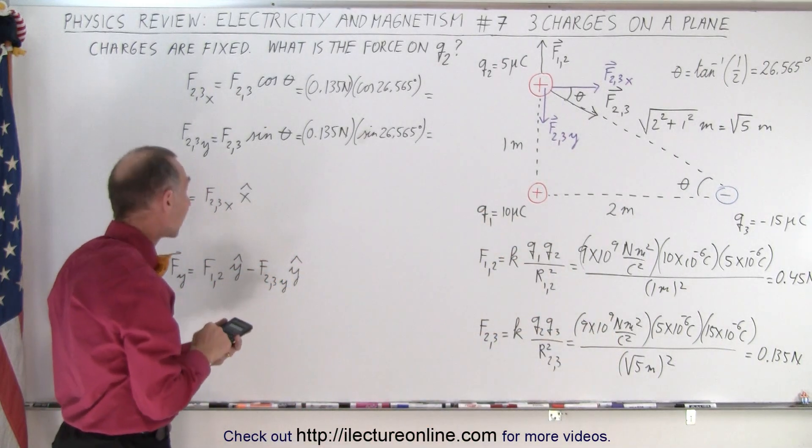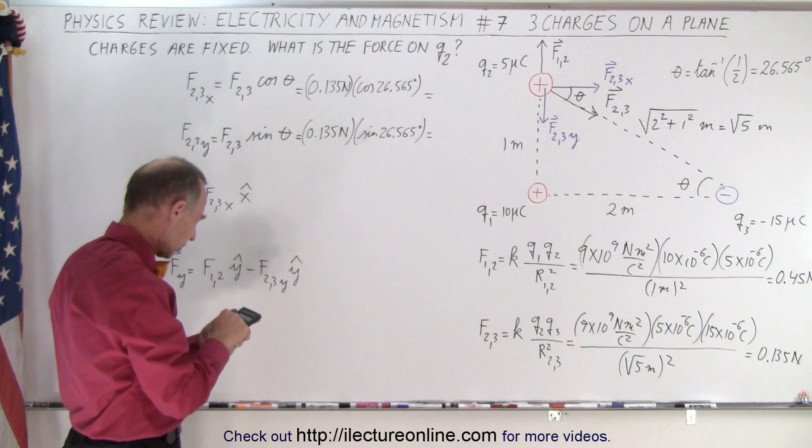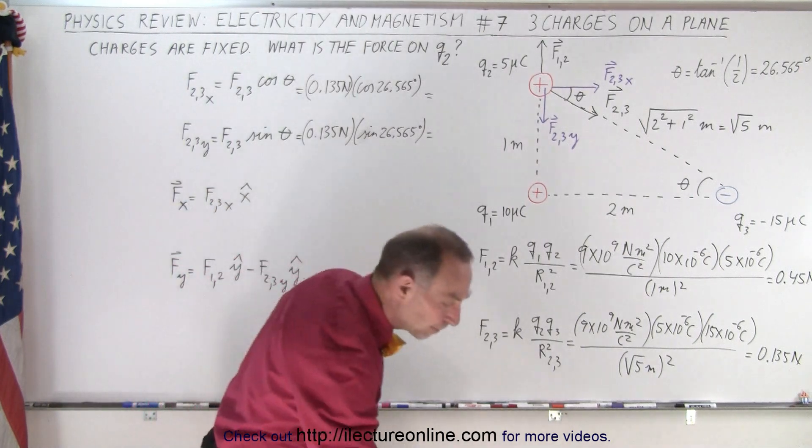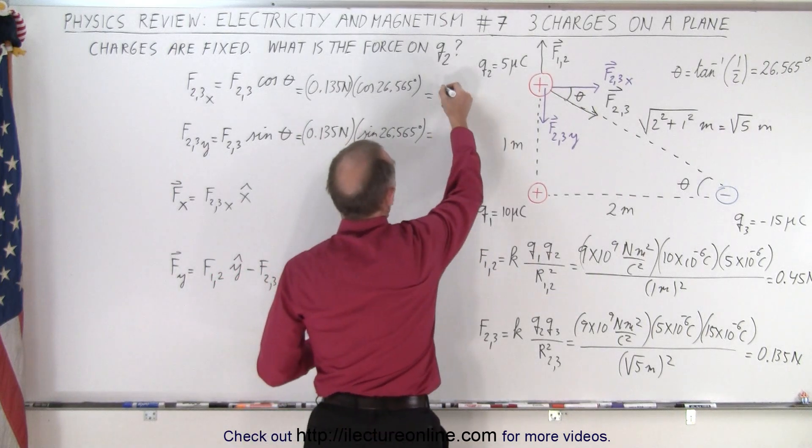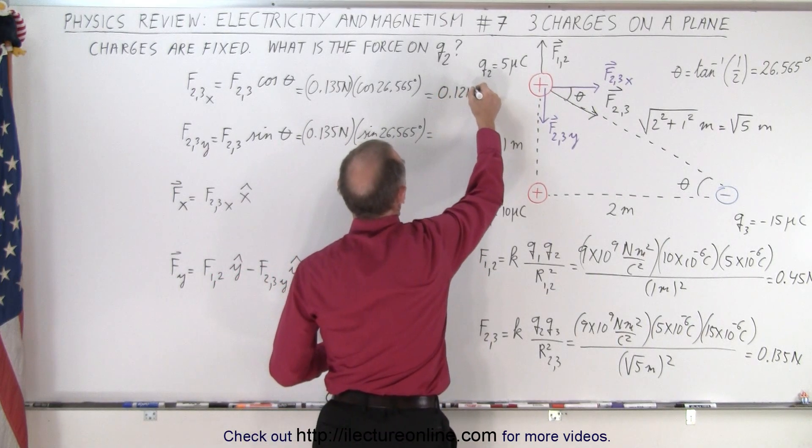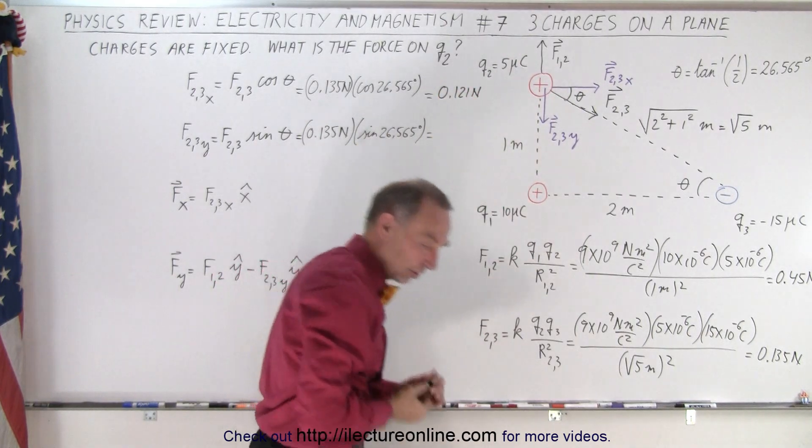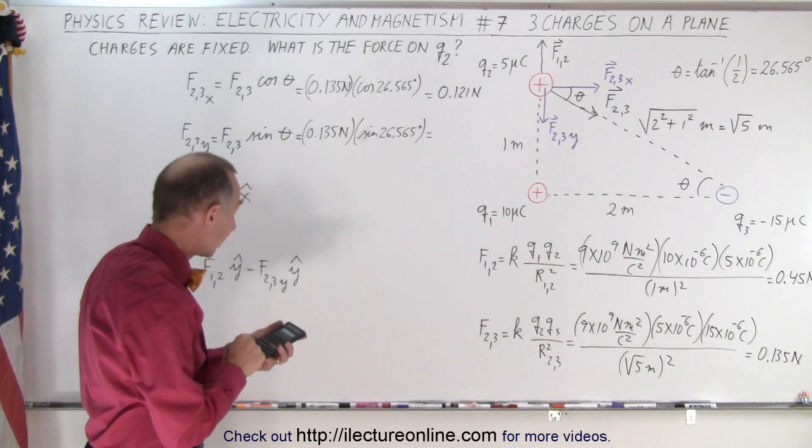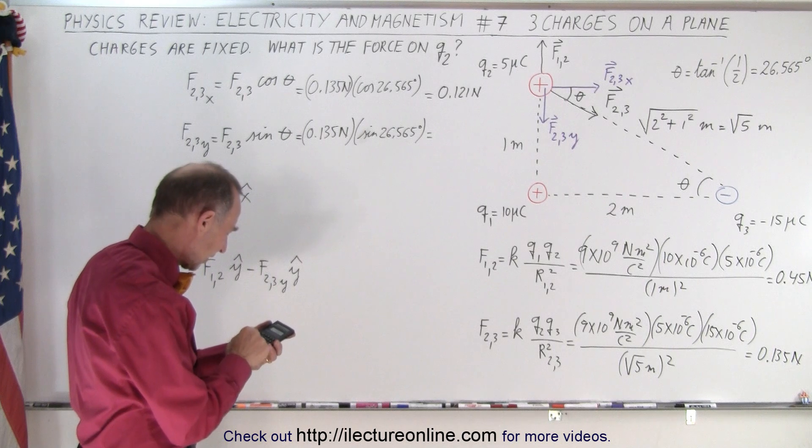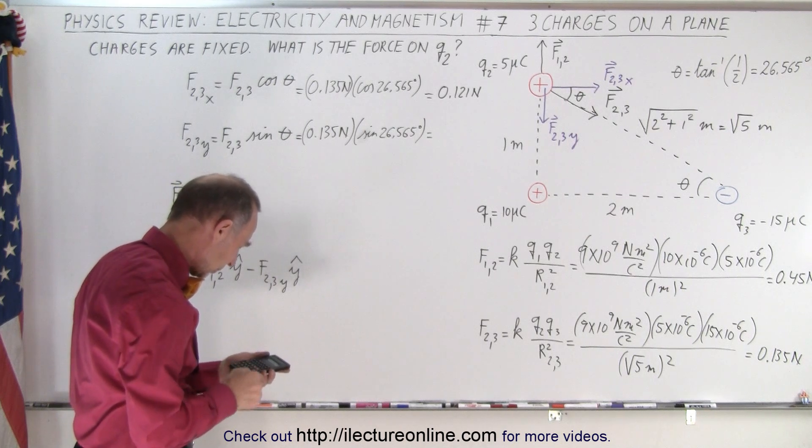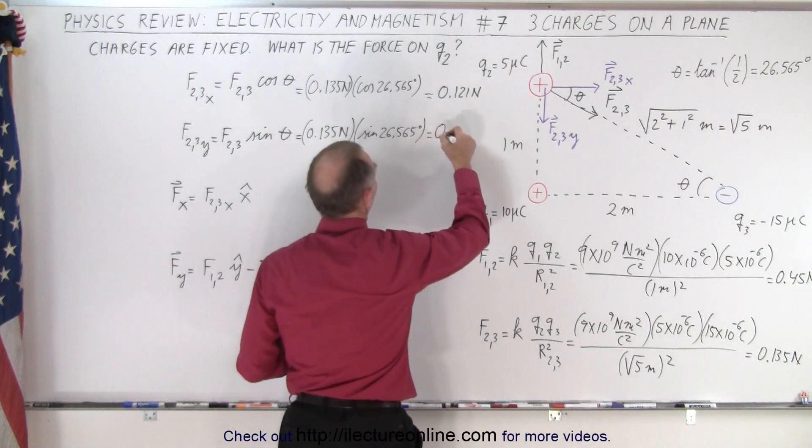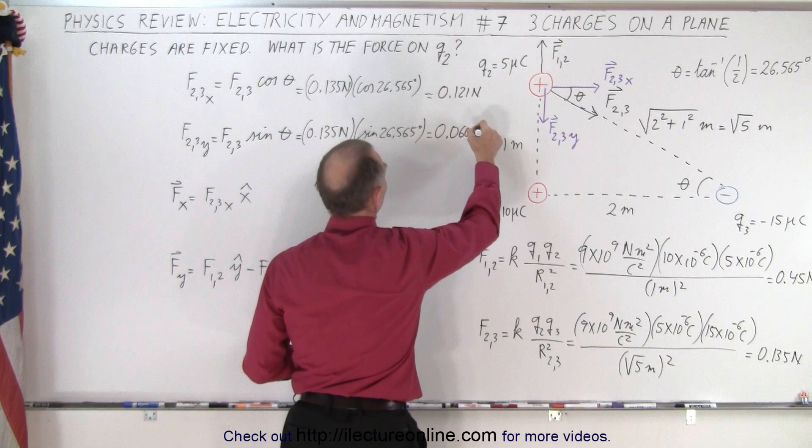So times 26.565, that's the cosine, equals, and we get 0.121 newtons for the x component, and 0.135 times 26.565, take the sine of that, equals, and we get 0.060 newtons.